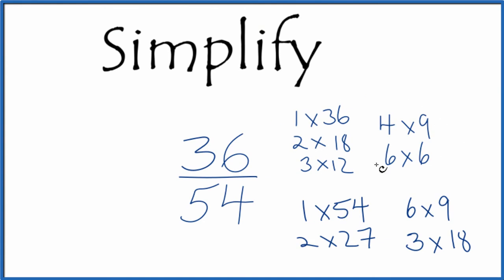So these are the factors for 36 and these are the factors for 54. We're looking for the greatest common factor. I see 18 here and 18 here. That's our greatest common factor.